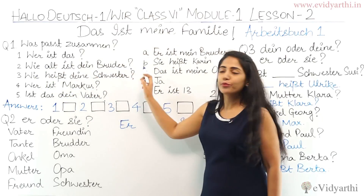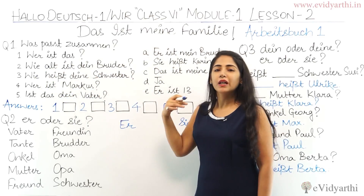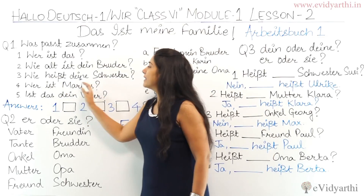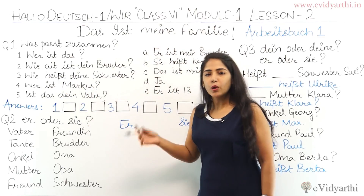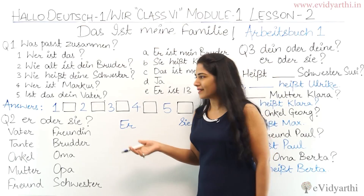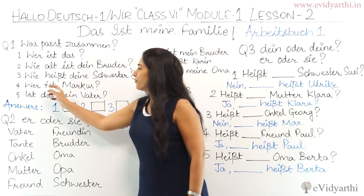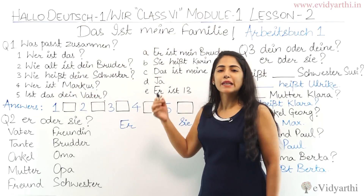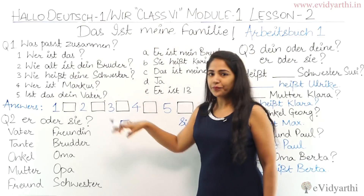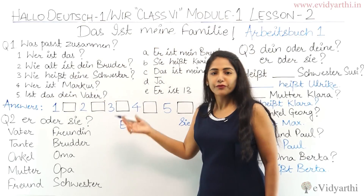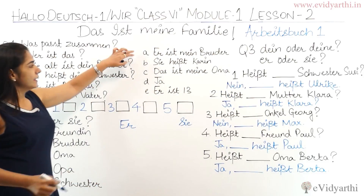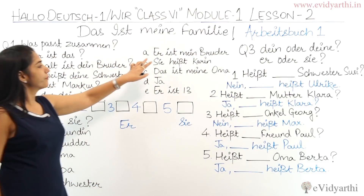We will discuss the meanings and then match. 'Wie alt ist dein Bruder?' means 'How old is your brother?' 'Wie heißt deine Schwester?' means 'How is your sister called?' or 'What is the name of your sister?' 'Wer ist Markus?' means 'Who is Markus?' Now let's see the next column.